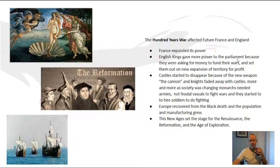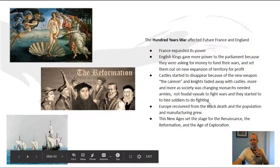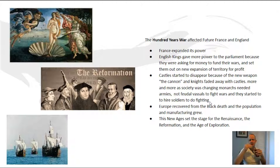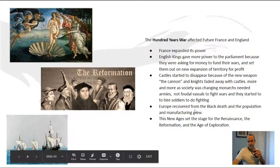The Hundred Years War affected the future of Europe and the world because a couple of things happened. France becomes a superpower after it wins the Hundred Years War. English kings gave more money to parliament because they were asking for more money to fund wars, and this set them on new versions of expansion. So parliamentary systems become stronger during this age. Castles started to disappear because of the new advent of the cannon, which makes medieval-style defenses obsolete. Feudalism starts to become archaic and gets phased out, because now you want to hire soldiers rather than rely on peasant lords.